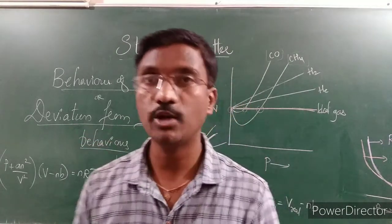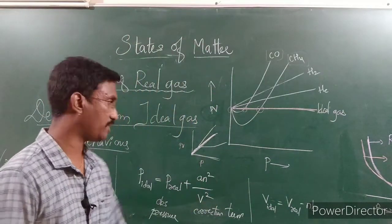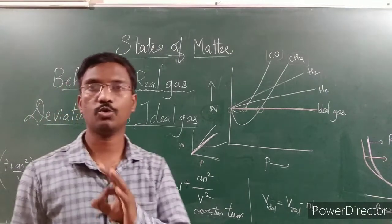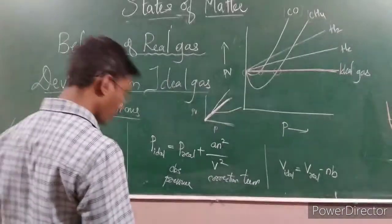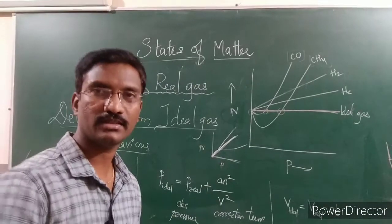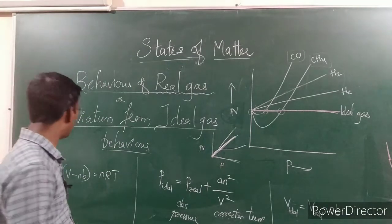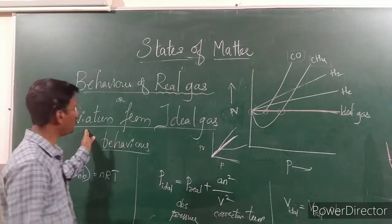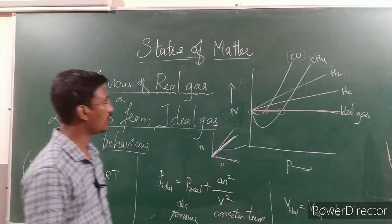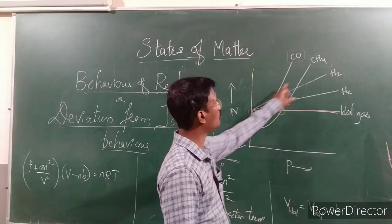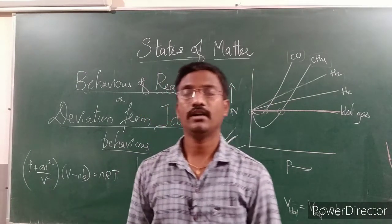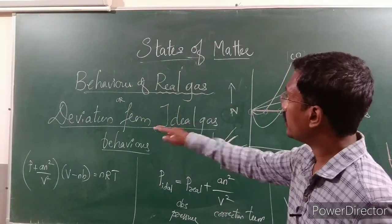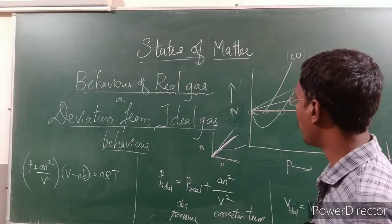For exam questions, you should be able to define the behavior of real gases. They will probably ask you to draw the graph showing deviation from ideal gas behavior — that is, the pressure versus PV graph. Sometimes they will ask you to discuss the behavior of real gas or explain the deviation of ideal gas from ideal behavior.